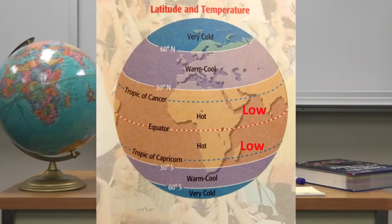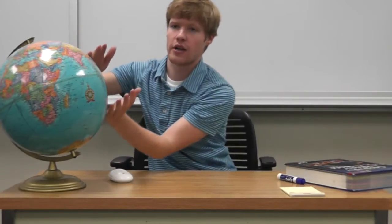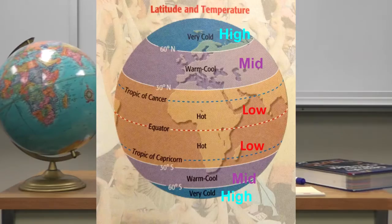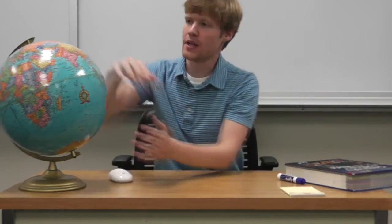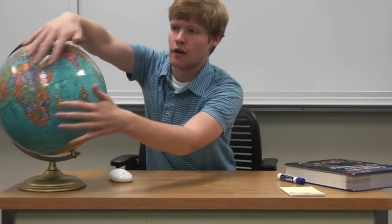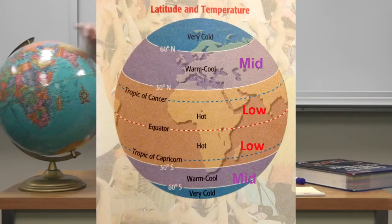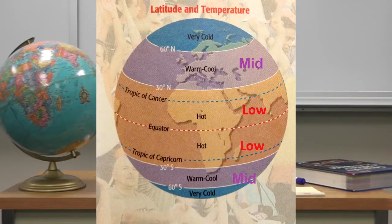Section 2 discusses why climates are different in different places — it looks at the factors affecting climate, such as latitude and elevation. The low latitudes are the area between 30 degrees north and 30 degrees south, basically right along the equator, and they have warm to hot climates. The mid latitudes are between 30 and 60 degrees north, and 30 and 60 degrees south. They generally have a mild or temperate climate that varies between cold winters and hot summers.